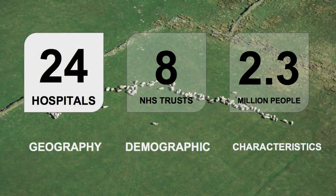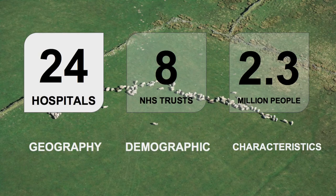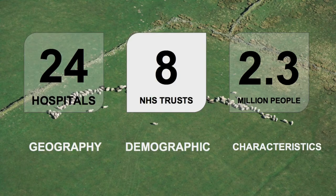Thinking about what these areas have got in common and how they differ — well, we've got 24 hospitals, widely distributed, and they've all got different geography. They are organised into eight different trusts, covering different patient demographics.